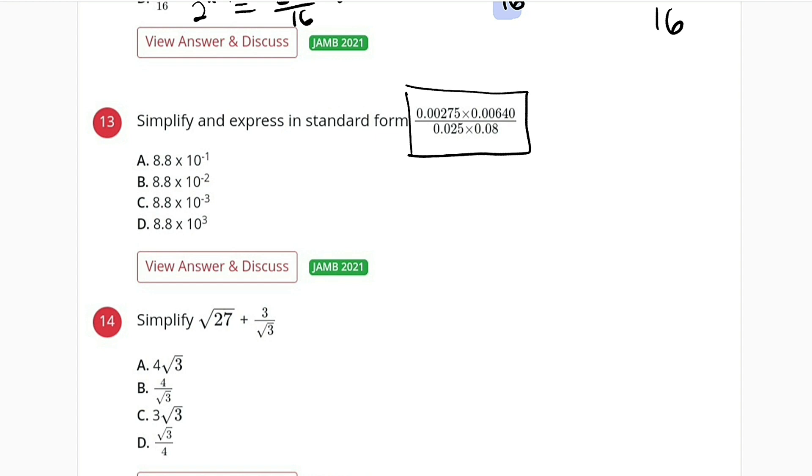This is equal to 0.0000176. Then if you multiply the other one, that is going to give us 0.002.